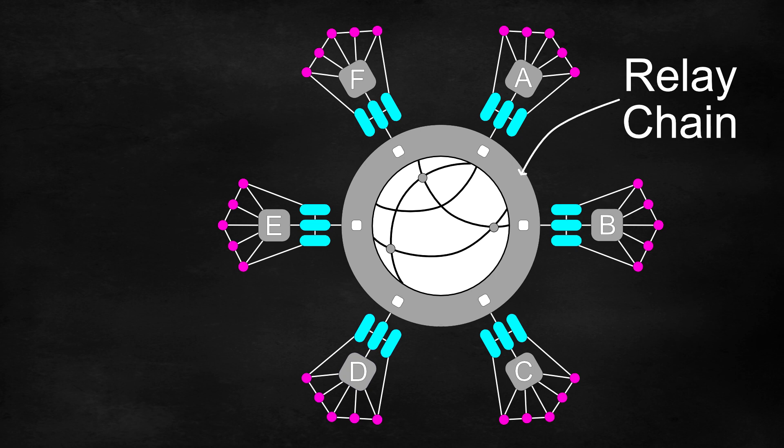The relay chain is the main chain on Polkadot or Kusama. It provides security and interoperability between the parachains.